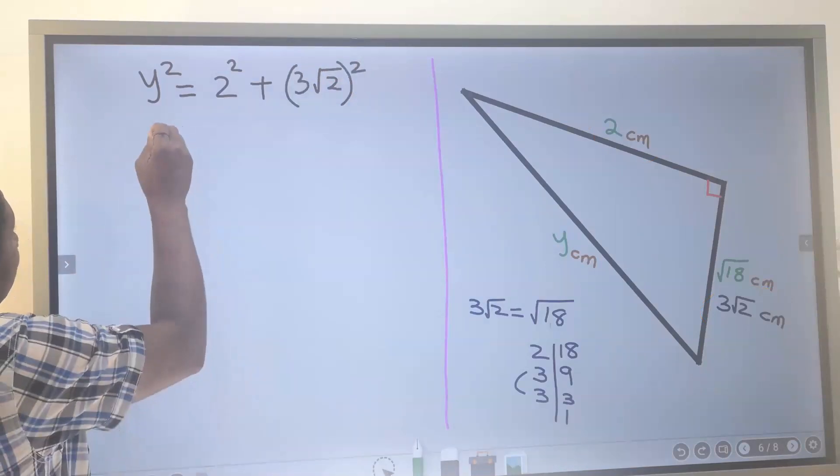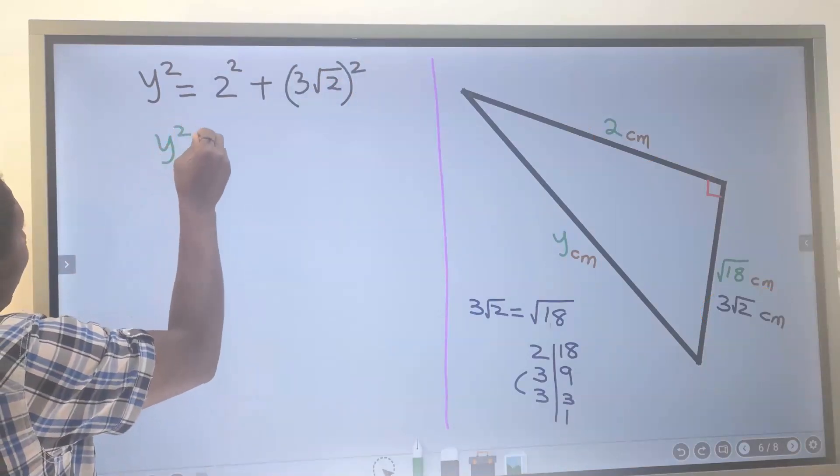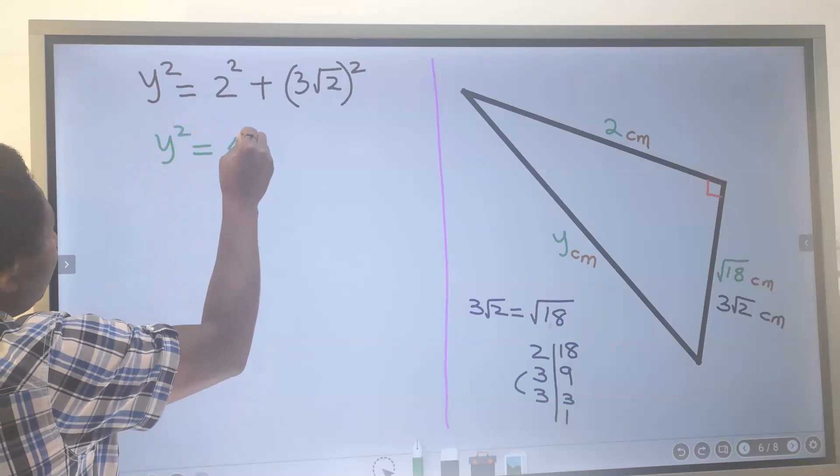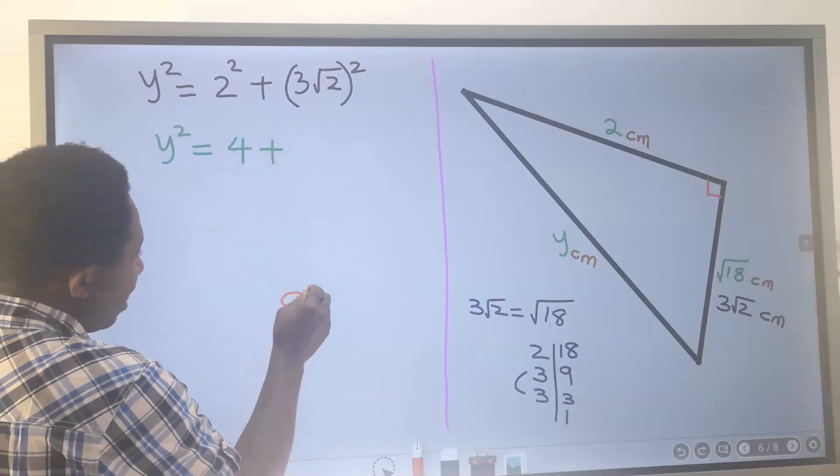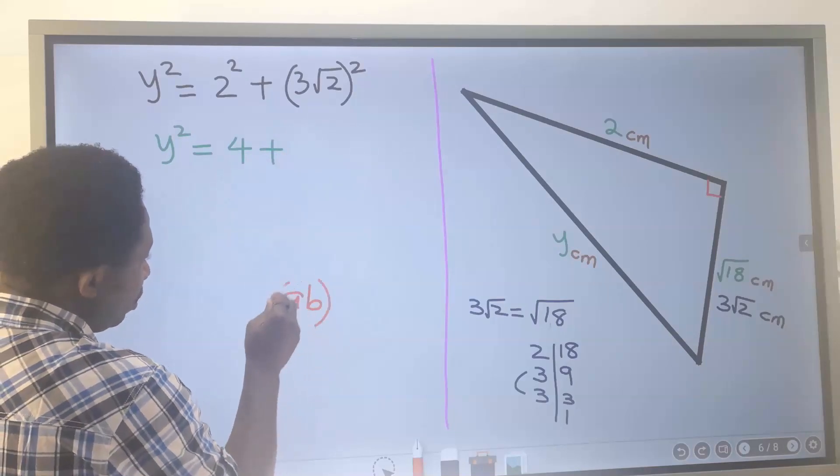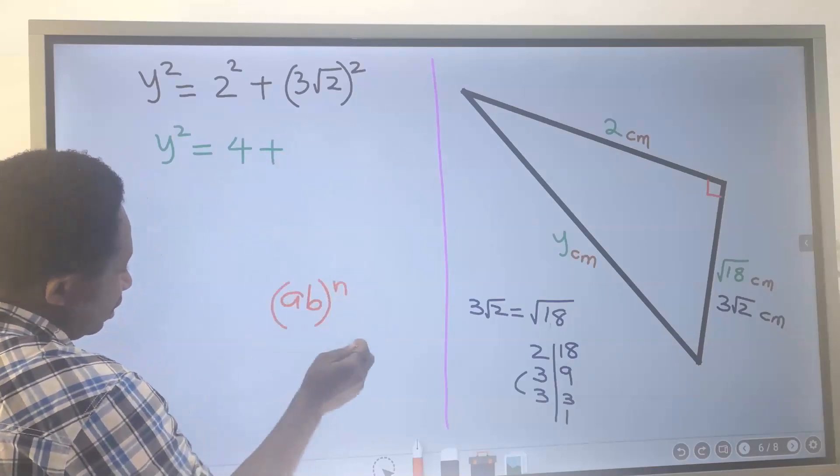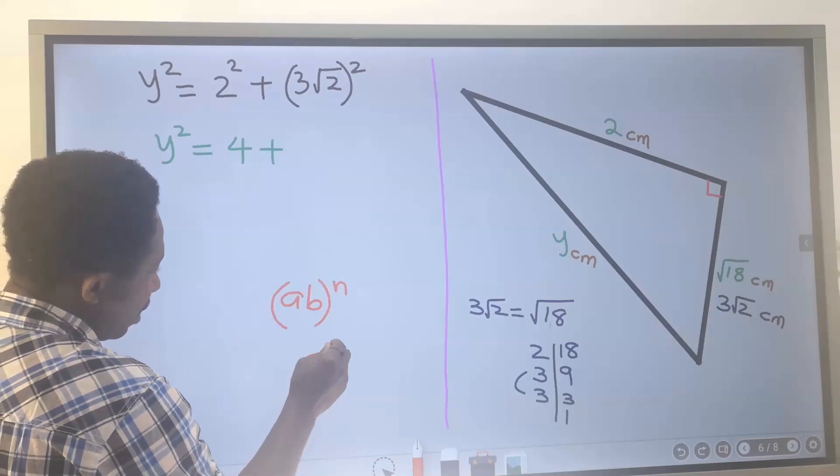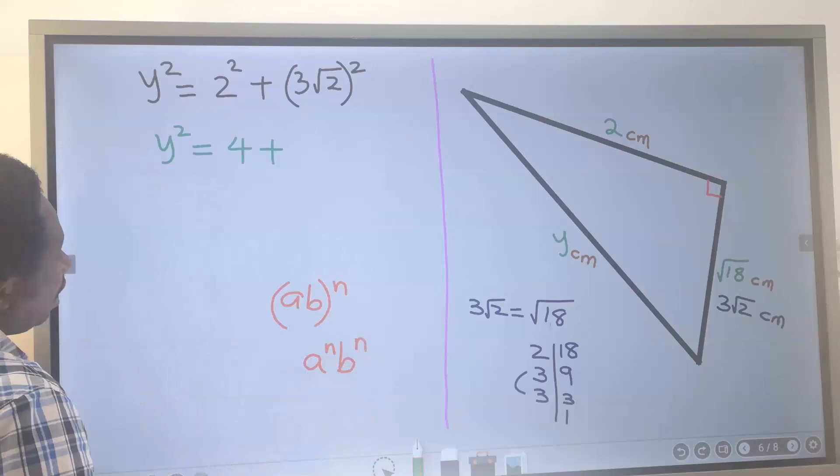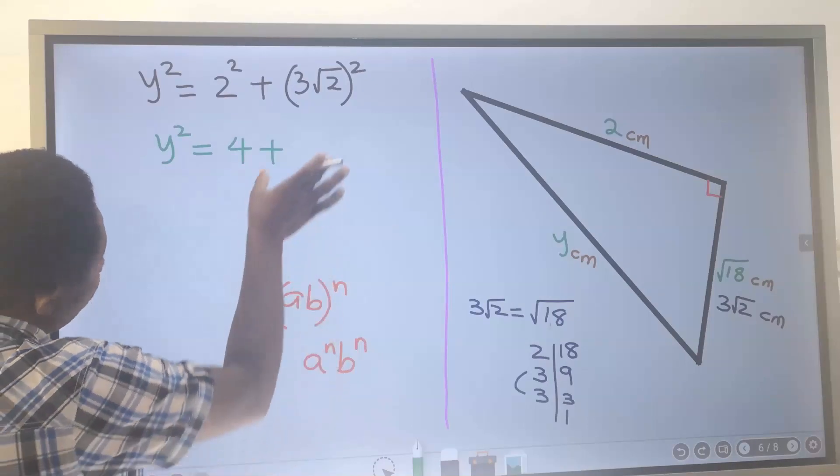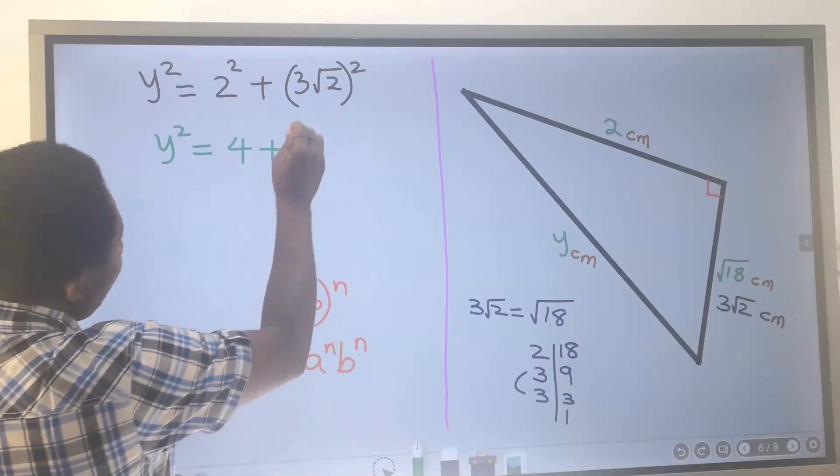Next, this is y² and this is 4 plus, according to the law of indices. If I have (ab) all to the power of n, this is a to the power of n and b to the power of n.